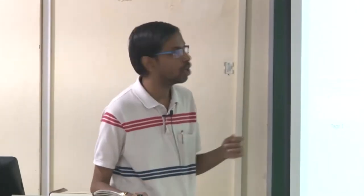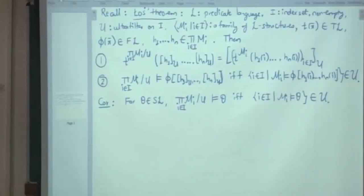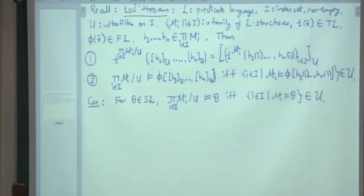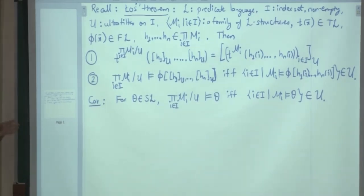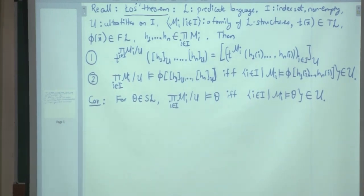The interpretation of a term gives a function where these two equivalence classes are actually equal. If in each structure you interpret that term at appropriate components, you get a sequence — the I-tuple — and the equivalence class of that I-tuple is the same as the interpretation over here. This is a consequence of the definition of ultra product for function symbols and constant symbols.